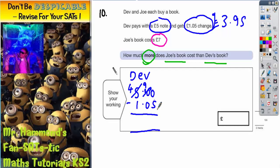Ten take away five is five. Nine take away zero is nine. Four take away one is three. So it is indeed £3.95 that Dev's book costs.